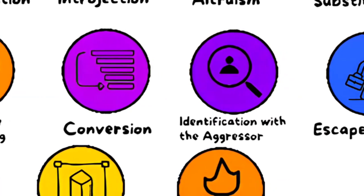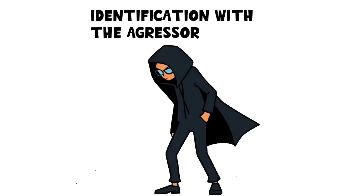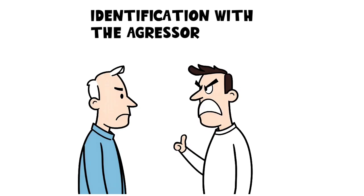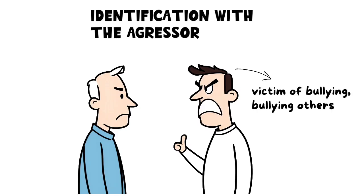Identification with the aggressor. This happens when someone adopts the traits or behaviors of a person who has harmed them. A victim of bullying might start bullying others as a defense mechanism.